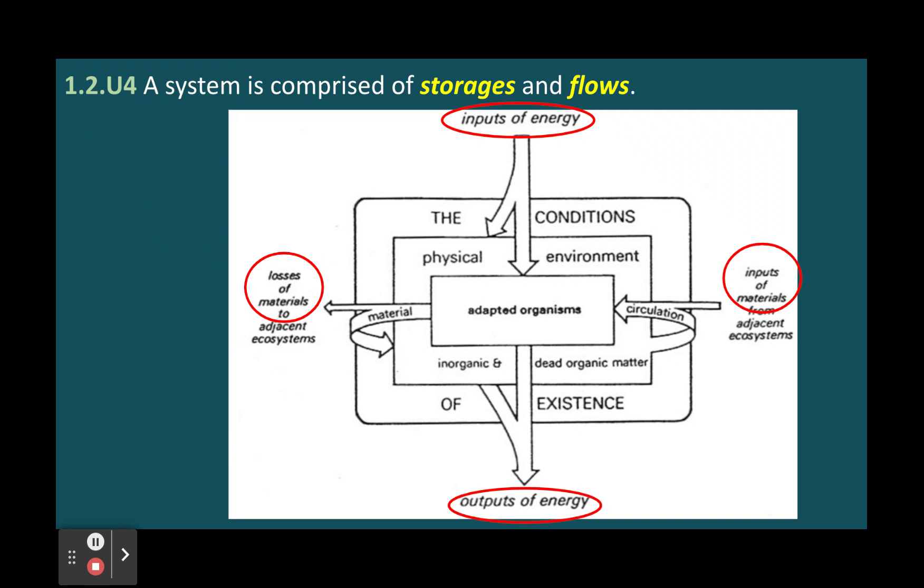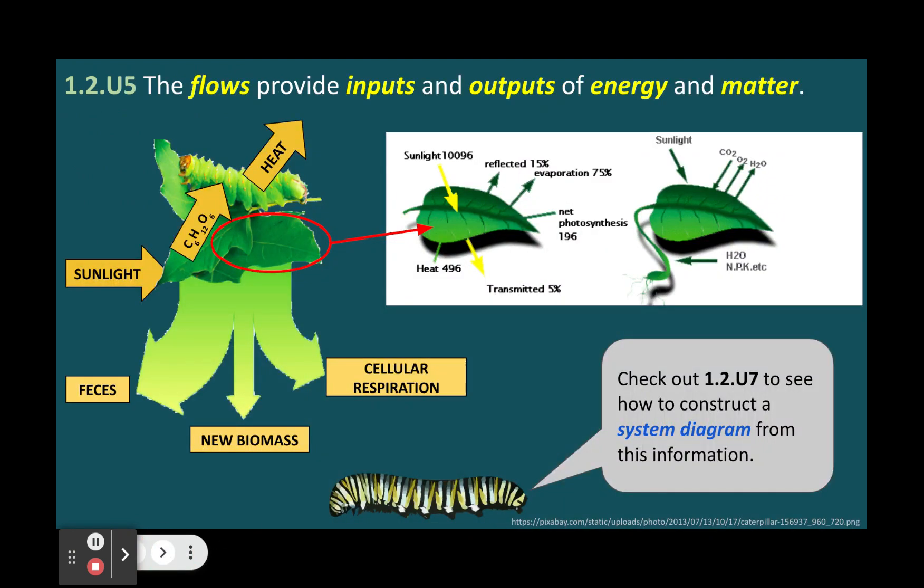For example, water moving from one place to another through precipitation, runoff, or infiltration is a transfer because it's simply the movement. A transformation is a change in the chemical nature, state, or energy level of matter or energy. For example, photosynthesis transforming light energy into chemical energy stored in glucose molecules is a transformation.